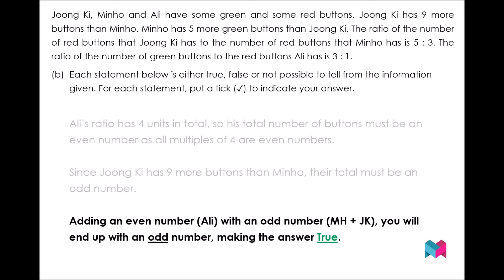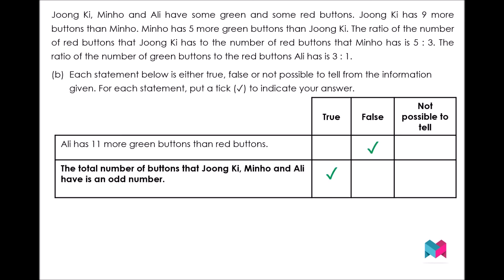Finally, when we add Ali's total, which is definitely an even number, to the sum of Jungki and Minho, which is definitely an odd number, we get an odd number. An odd number plus an even number will always give you an odd number, making the statement true. That was quite an exhausting question! Do watch the video slowly to digest the logic behind the question, and we will see you tomorrow in our video tutorial. Goodbye.